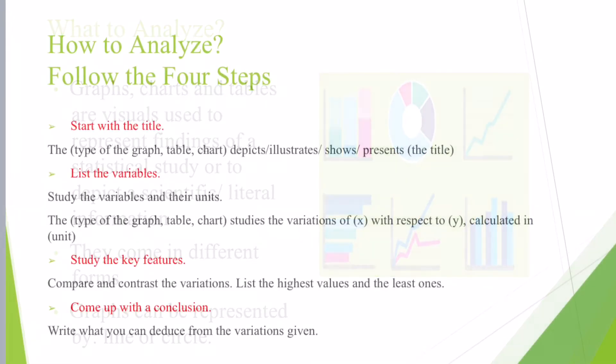How to analyze? In order to analyze a graph, you have to follow four steps, starting with a title, where you show the type of the graph, table, or chart. Then you follow it with a verb in the present simple tense, like depicts, illustrates, shows, or presents. Then you follow the verb with the title of the chart or graph that you're analyzing.